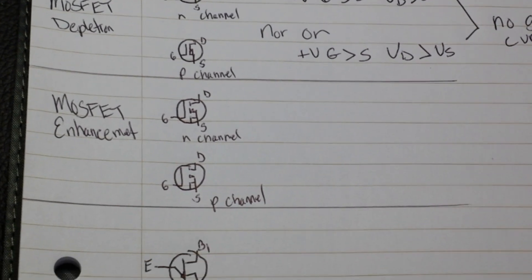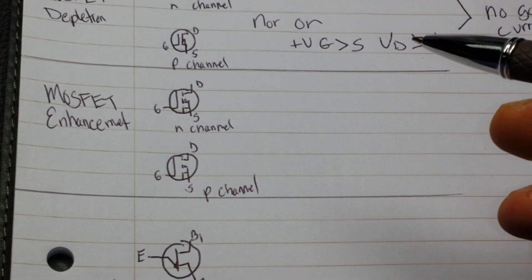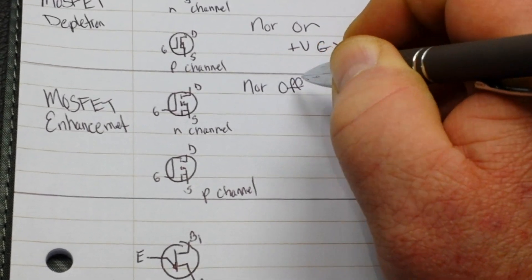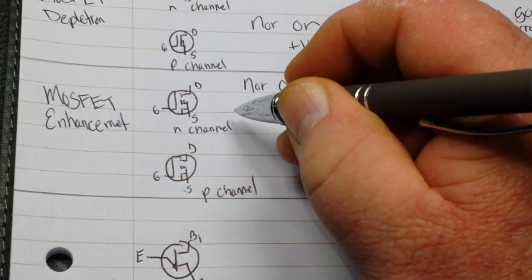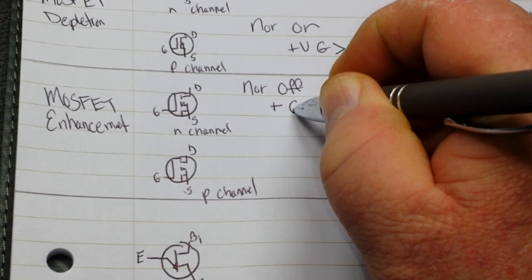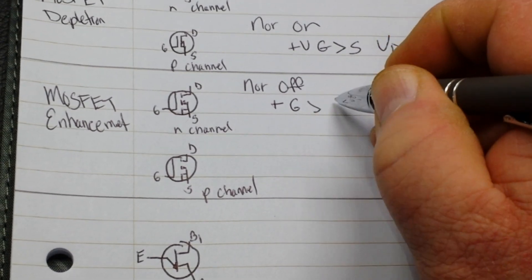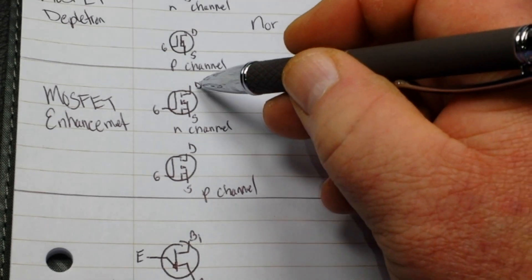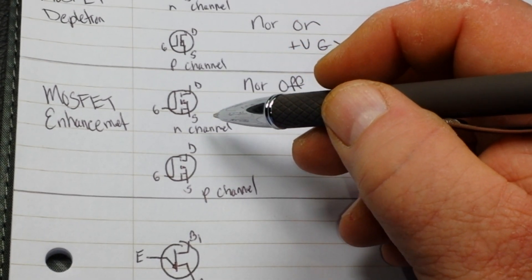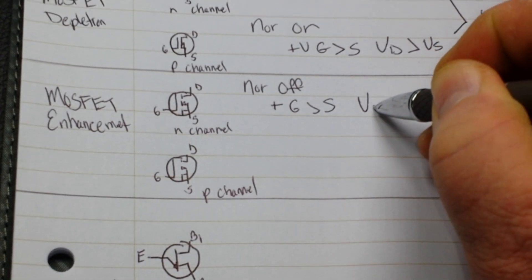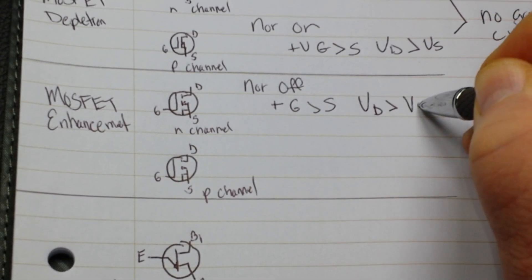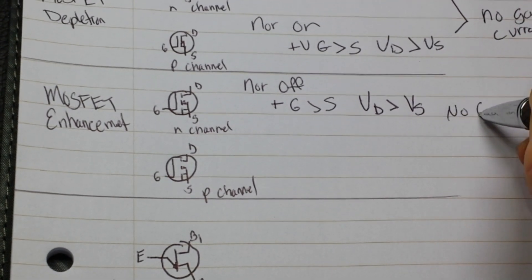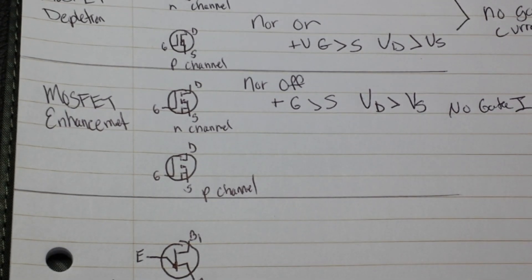Let's move on down to our enhancement mode. They are normally off. So our N channel, a small positive charge in its gate relative to the source, permits the flow from drain to source. It operates voltage at the drain greater than voltage at the source. And again, no gate current is required.